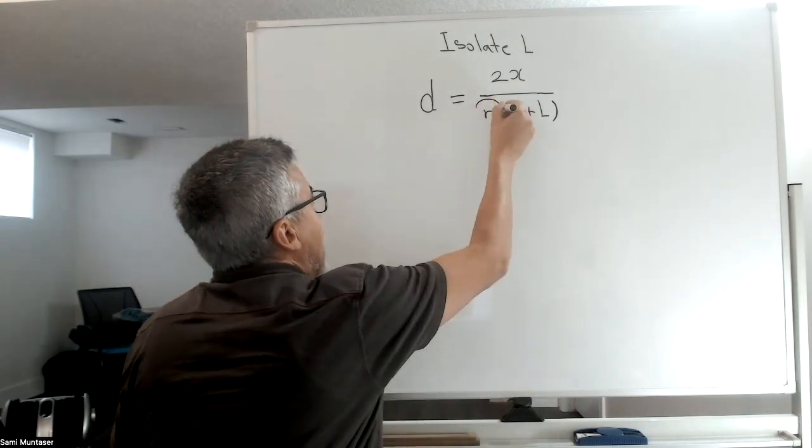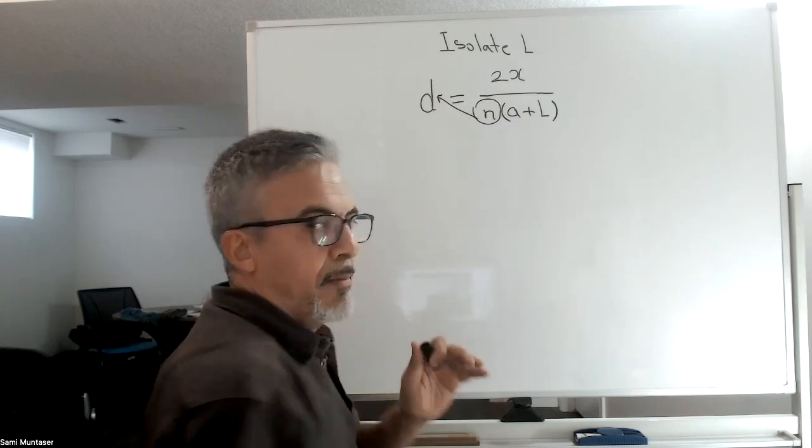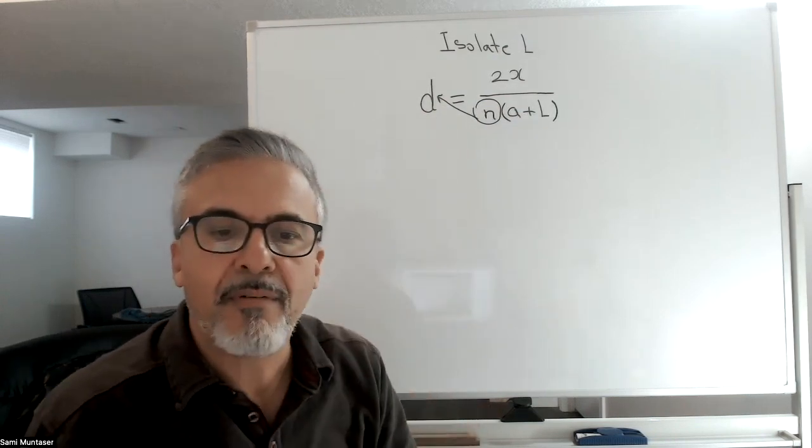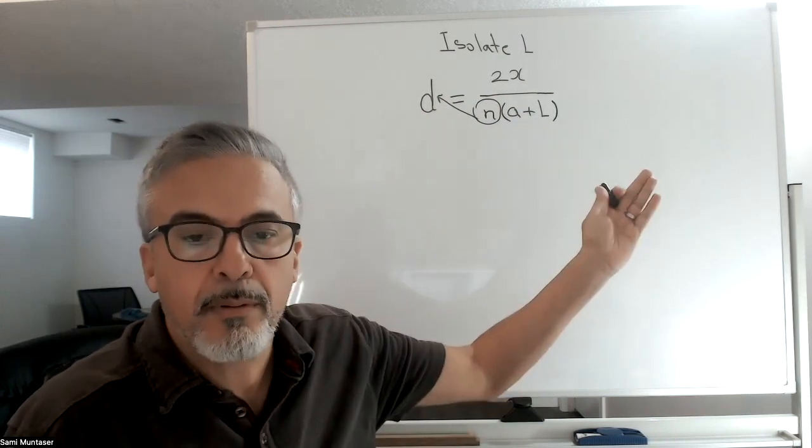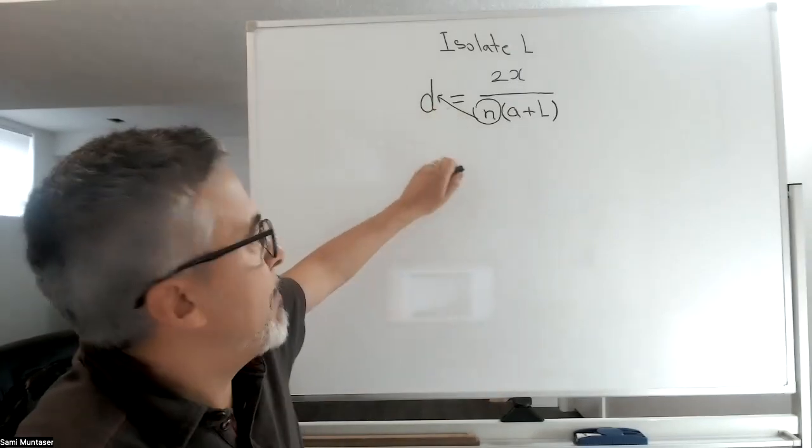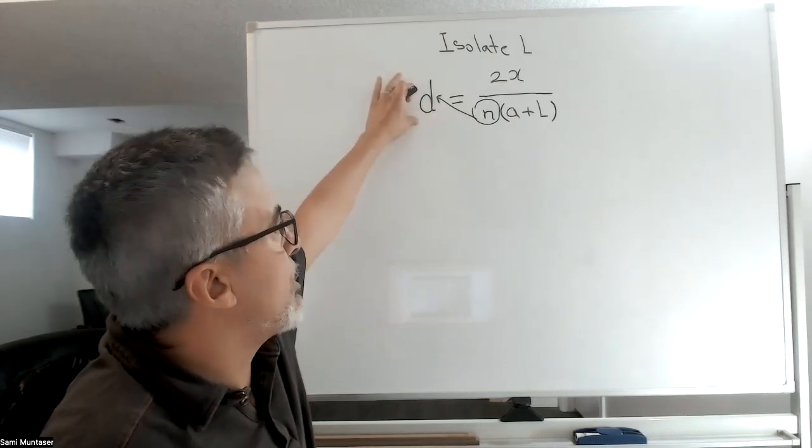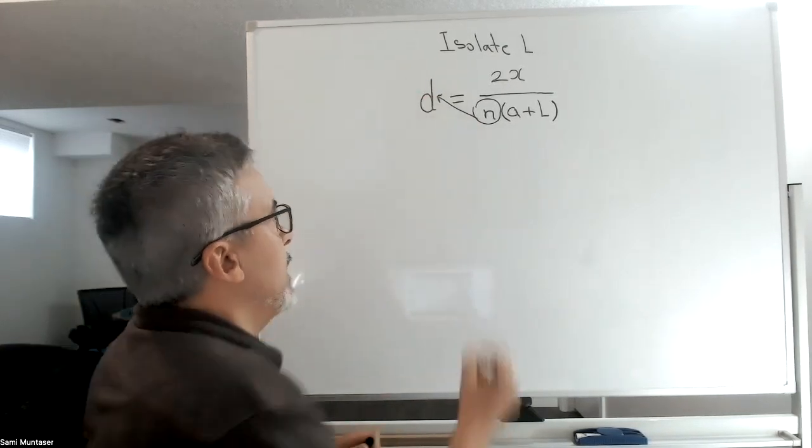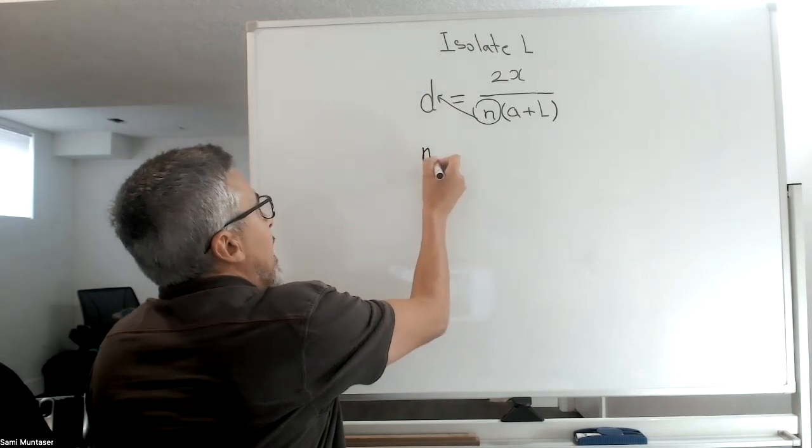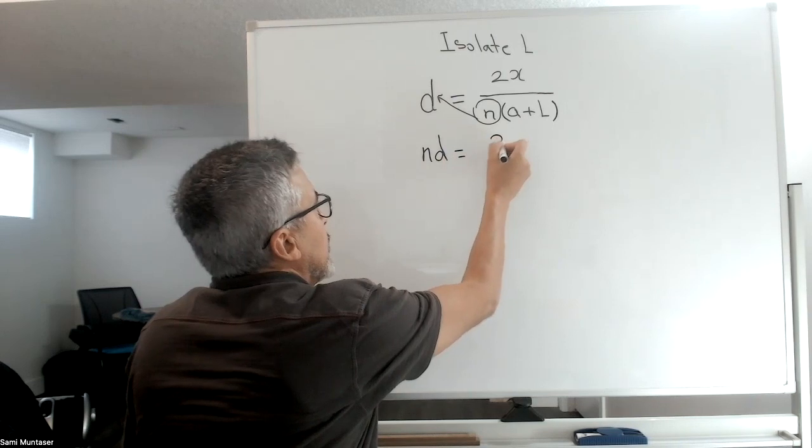I'm going to take this n right here and cross multiply it to the d. Remember I said anything on the bottom of a fraction you could cross it to the top. If it crosses the equal sign it has to cross to the top. This d is over one, so n crosses to the d and I'm going to have nd equals 2x over a plus L.